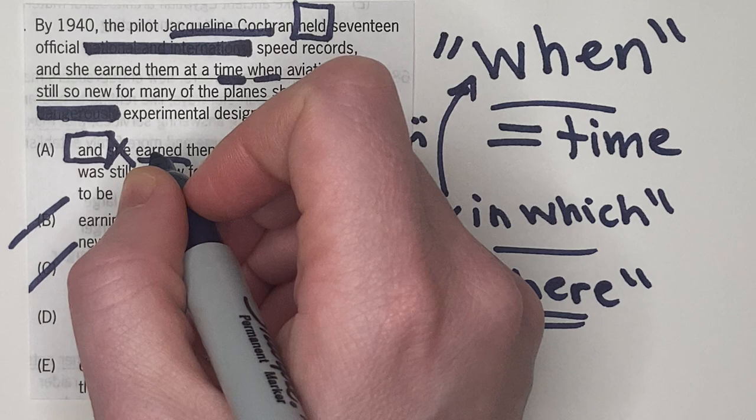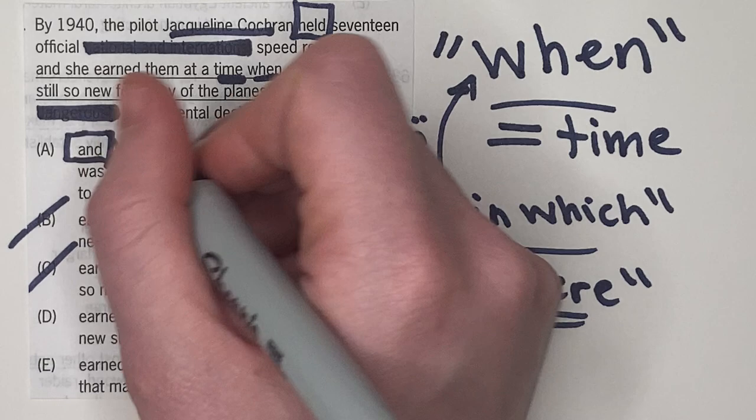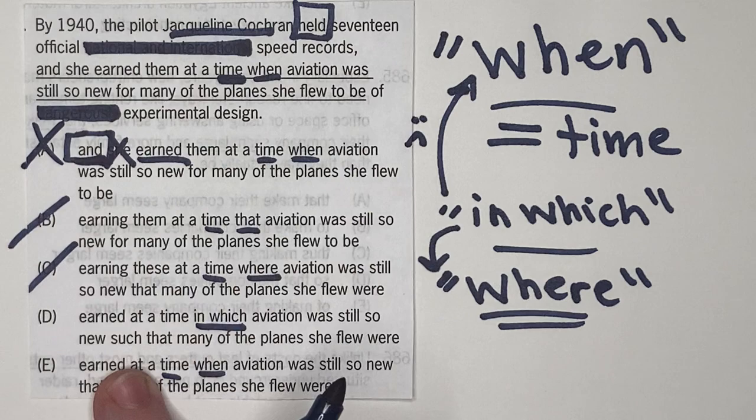So I would encourage you to be very suspicious of pronouns like he, her, they, she, et cetera, that pop up after conjunctions like and, but, or on the GMAT.